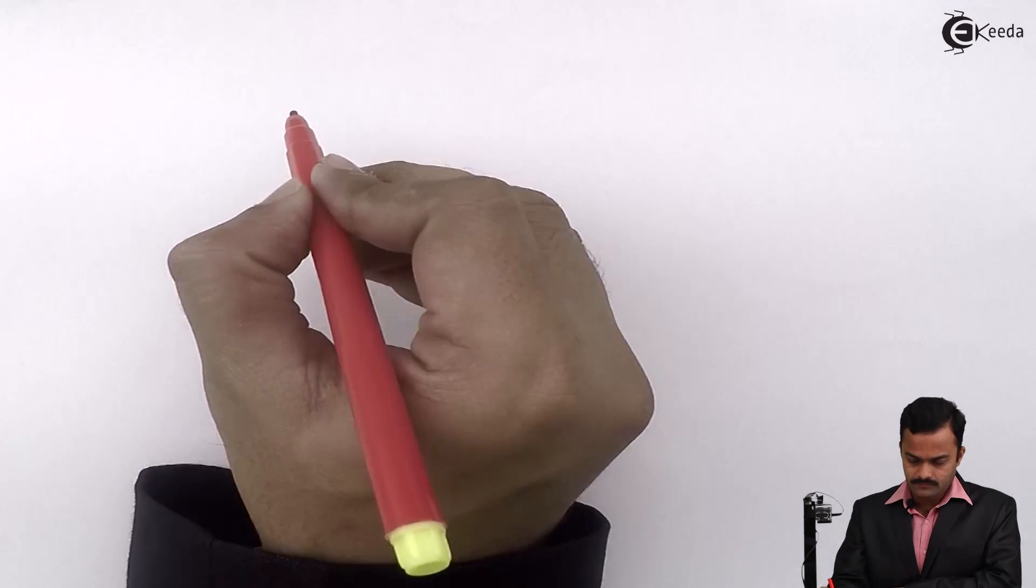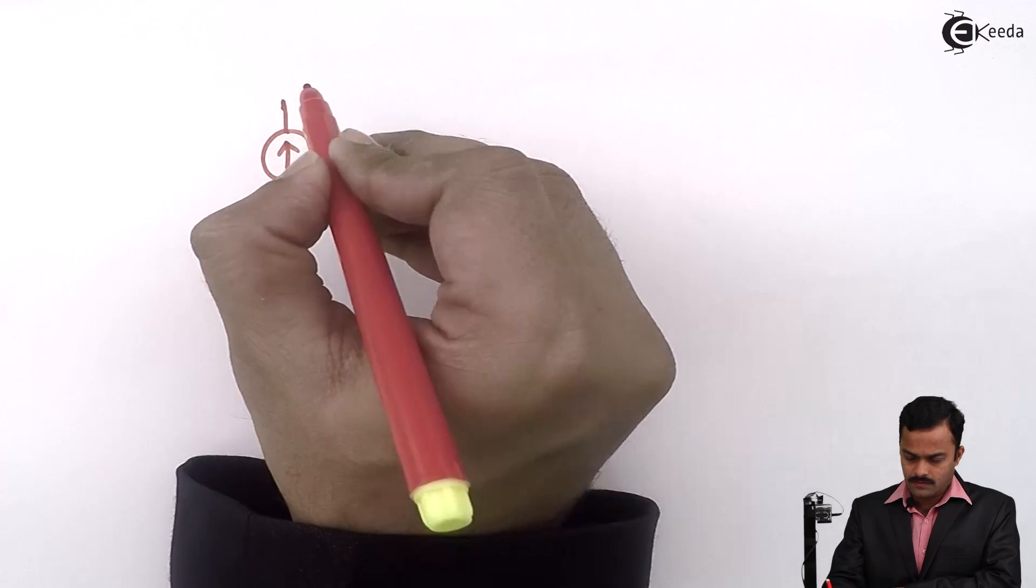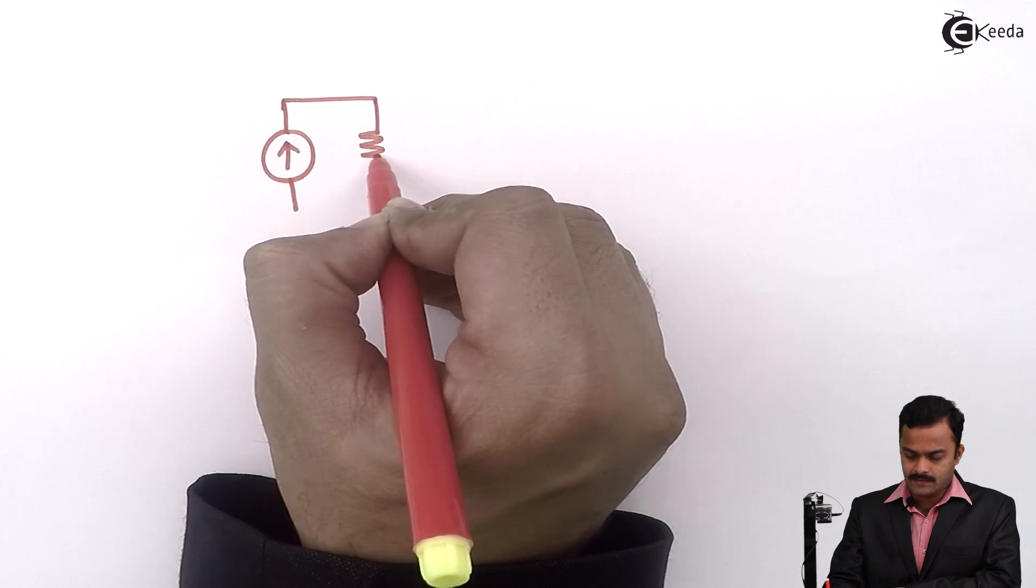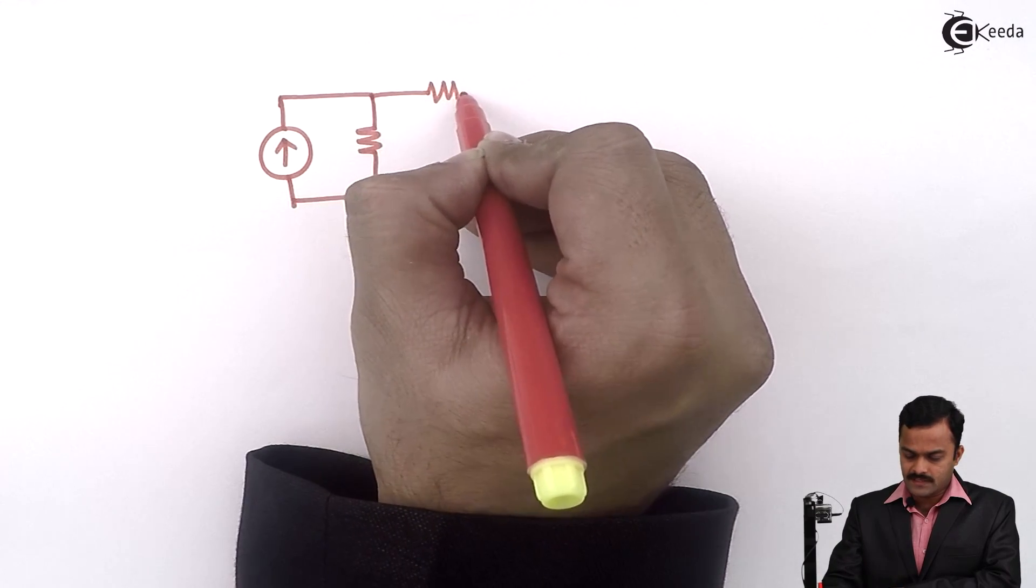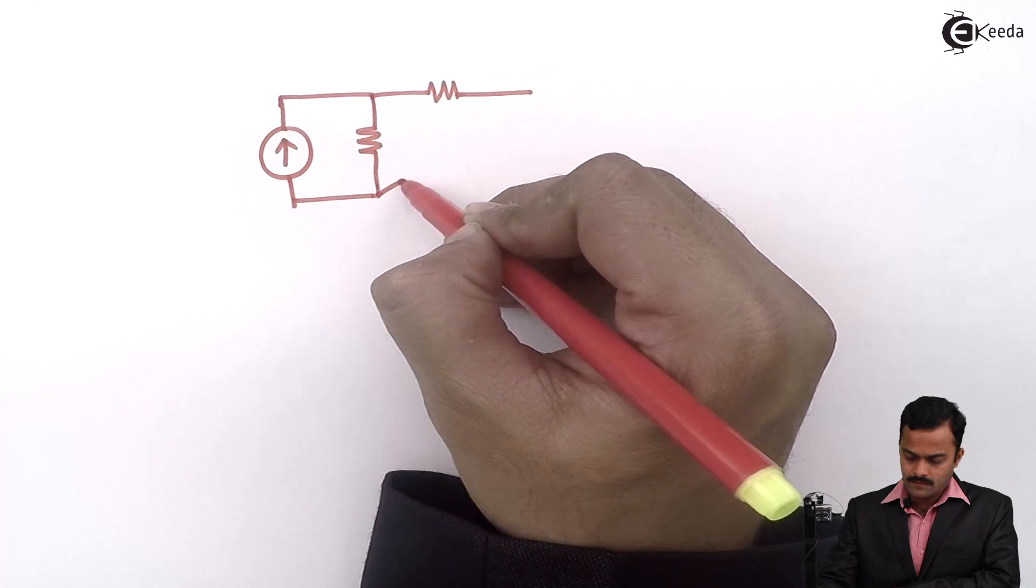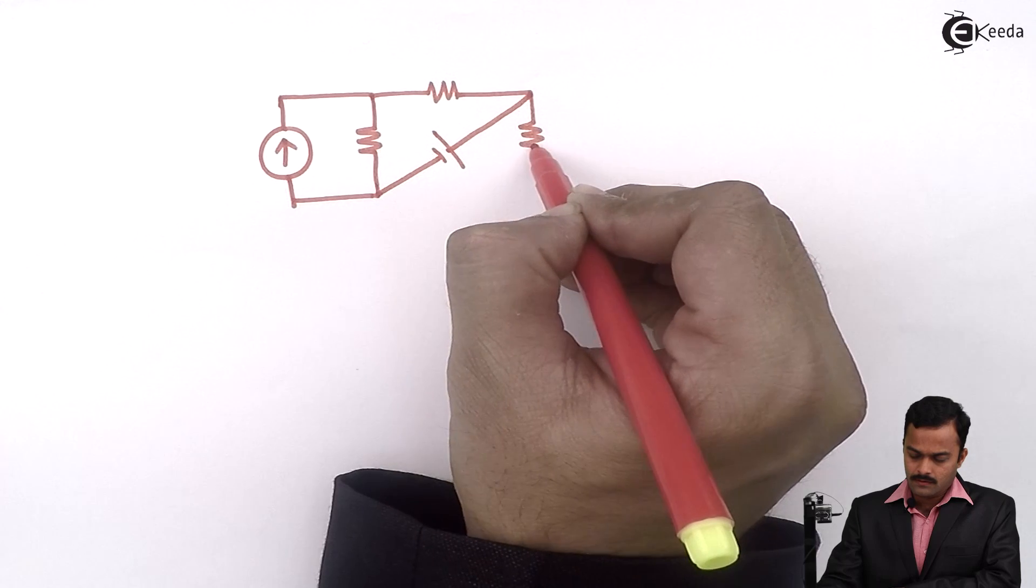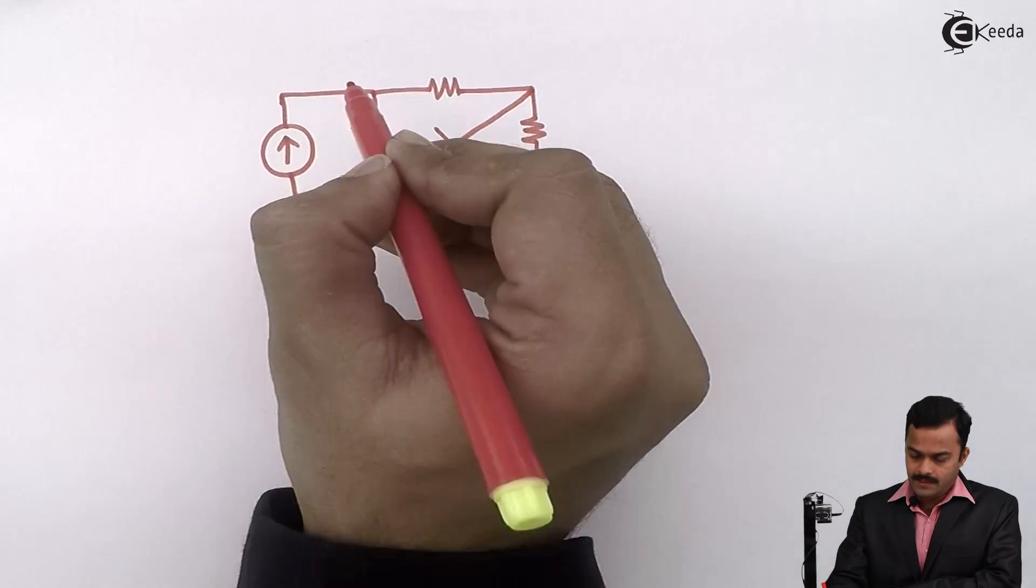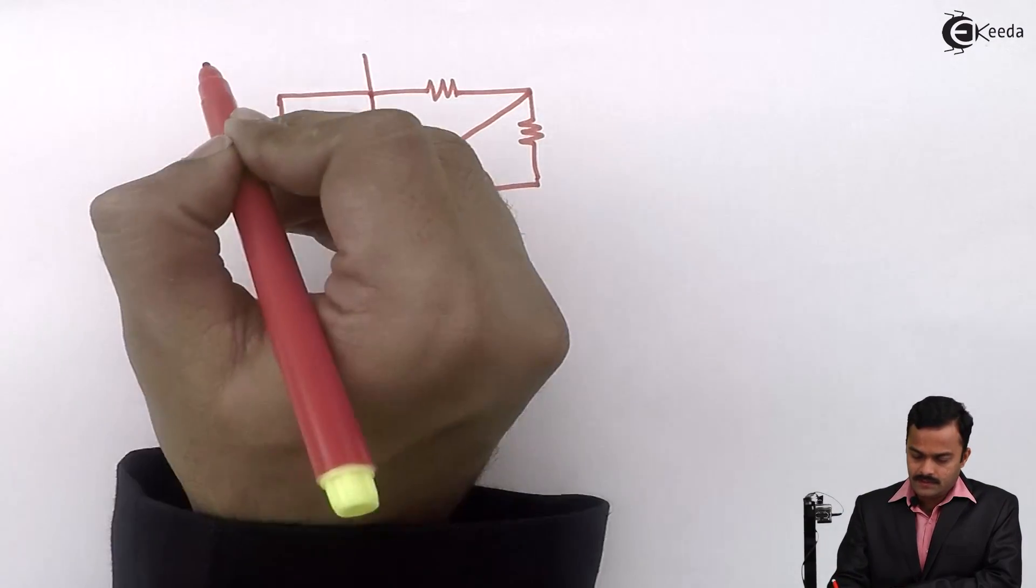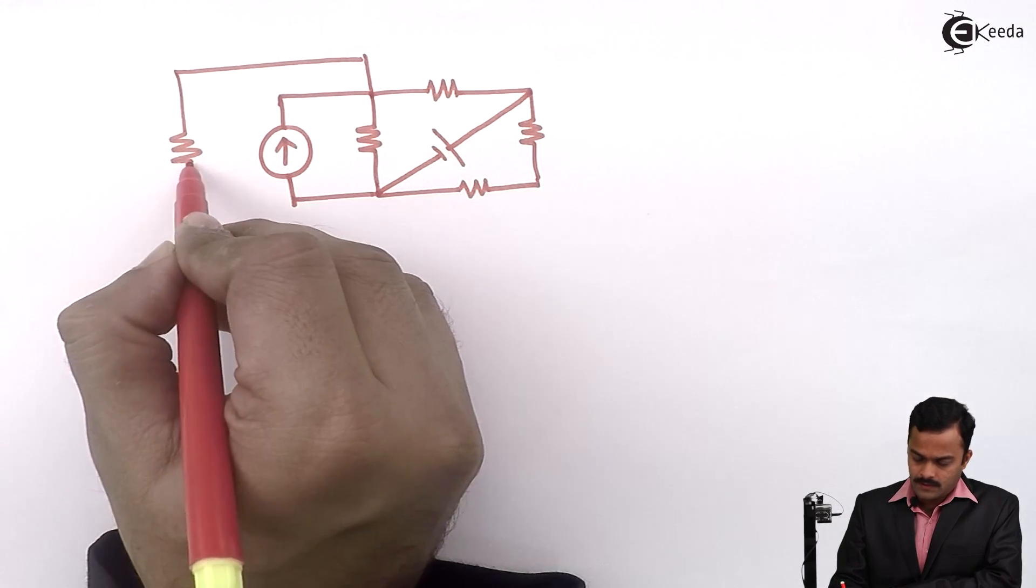I am considering a numerical with a current source, resistance is connected across it, one more resistance, a battery is connected between these two points with two series resistances like this and the target resistance will be connected like this.